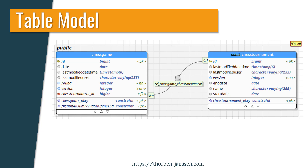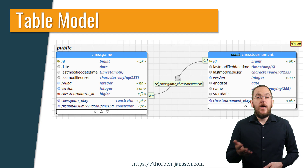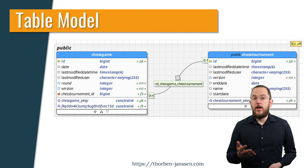I prepared this table model to show you the different mapping options. The ChessGame and the ChessTournament table both contain the columns Version, LastModifiedDate, and LastModifiedUser, which are typical examples of shared technical columns. At first glance, the mapping as a MappedSuperclass and an Embeddable seem to be a good option, but both have their downsides, as I will show you in this video.